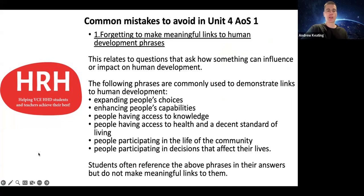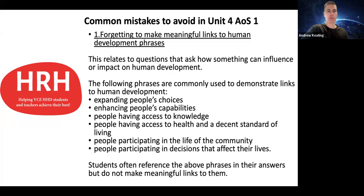The first common mistake is forgetting to make meaningful links to human development phrases. If you've covered Unit 4, Error Study 1, you'll have covered the topic of human development and looked at the human development definition from the United Nations. When questions ask how a scenario or case study might influence, impact on, or promote human development, you're expected to refer to one or more phrases from the human development definition. You need to make sure you're making meaningful links — not just stringing phrases together in a sentence that doesn't show an understanding of that particular phrase.